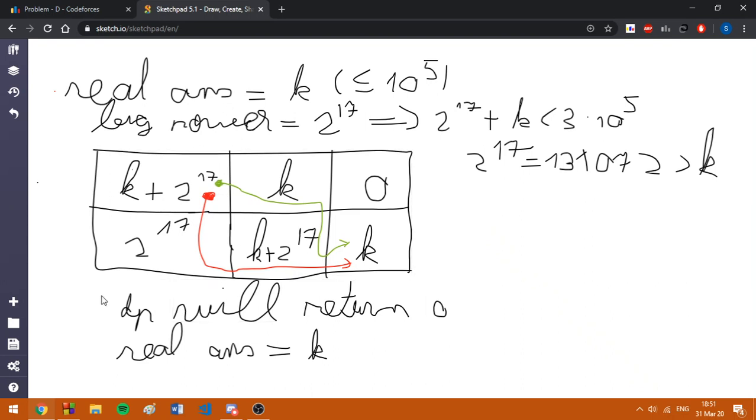And thus, our DP value will be 0, because we added here a 0, just to be sure. And the real answer is k, because we have k in all these places.